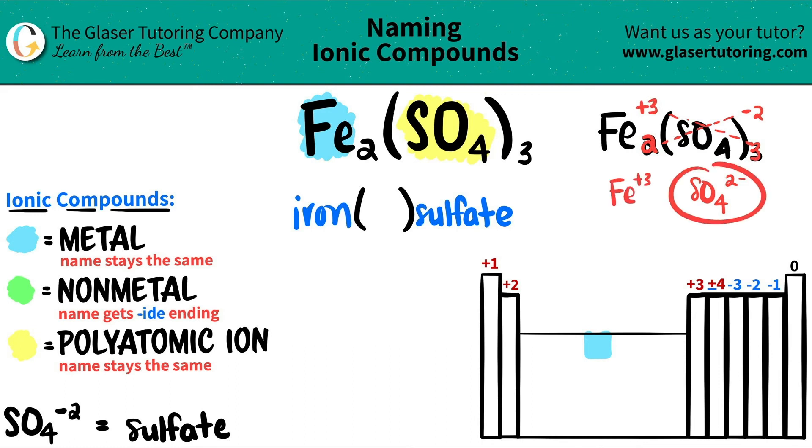Just double check to make sure that this is correct. That's why you have to memorize the charges of polyatomics. It is a negative two charge always. So if this checks out, the iron is going to check out and that's the charge of the iron, a three.